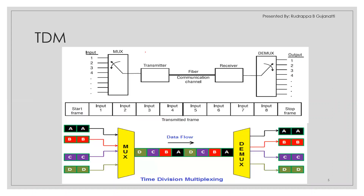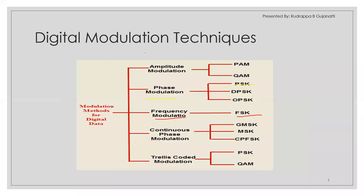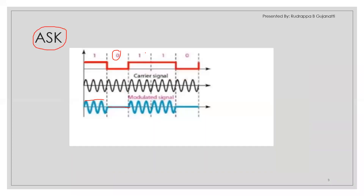Before going into the experimental part, PSK is remaining and will be taken up if time permits. We can implement these things using discrete components or using lab kits. In the case of discrete components, ASK and FSK can be implemented using any switching elements — diodes, transistors, MOSFETs, or multiplexers — that perform the required operation.